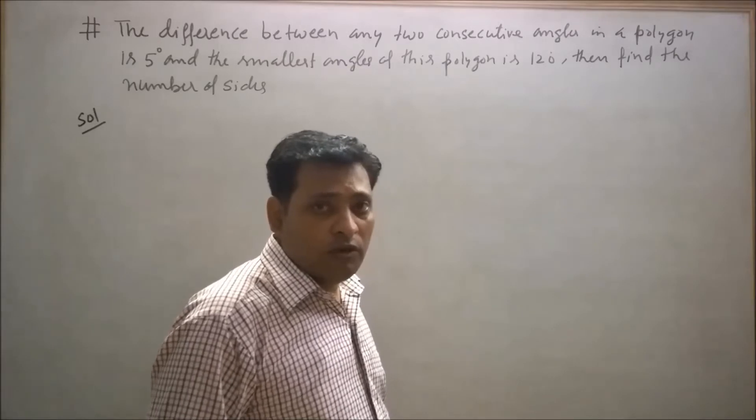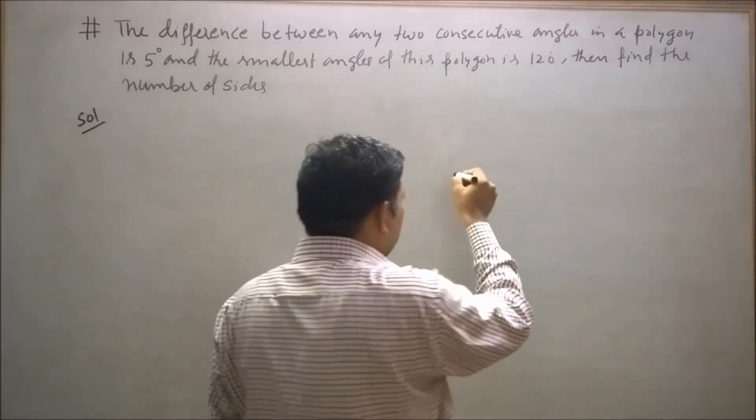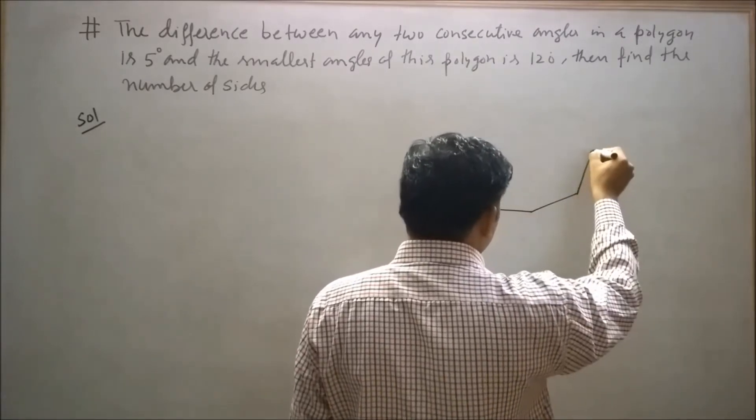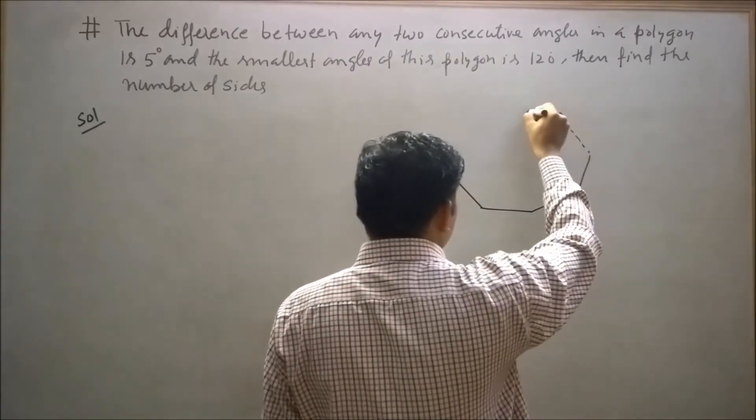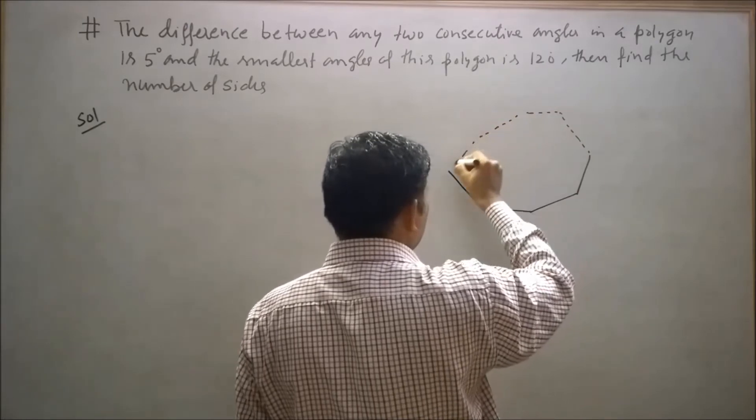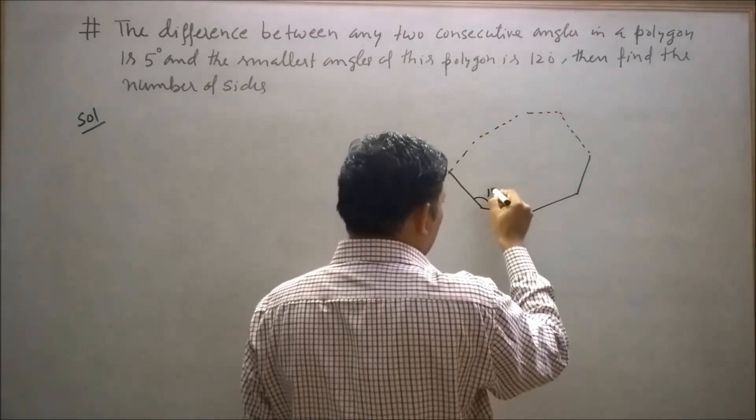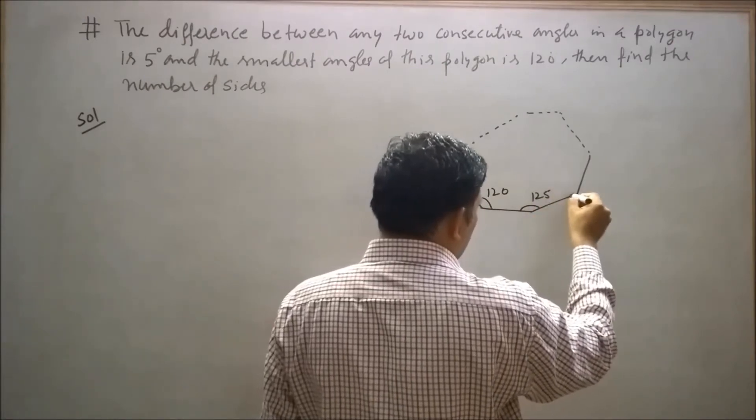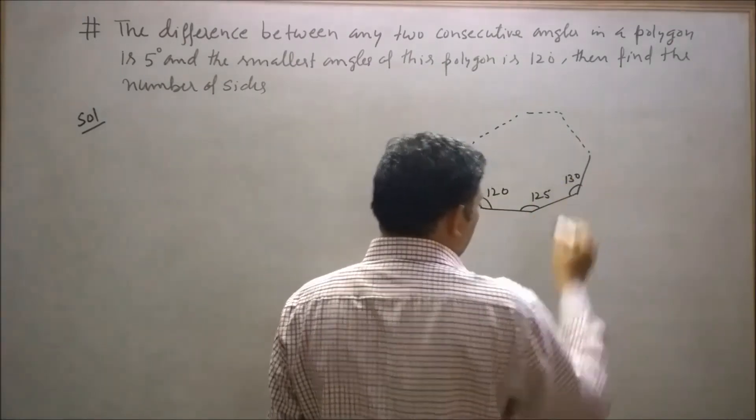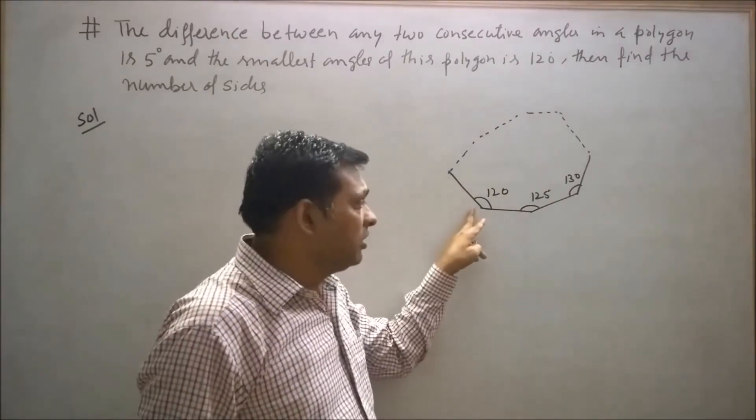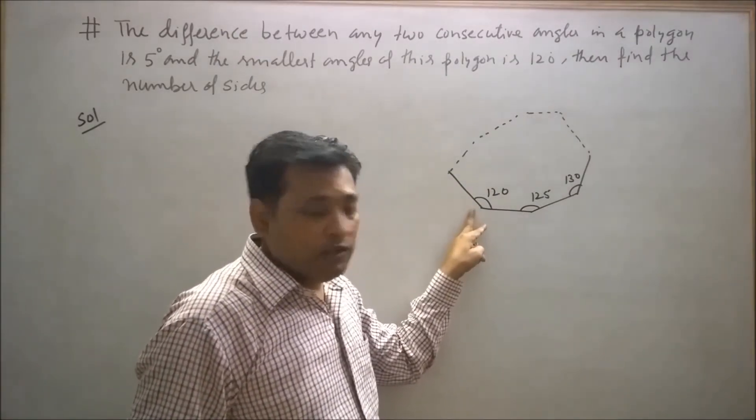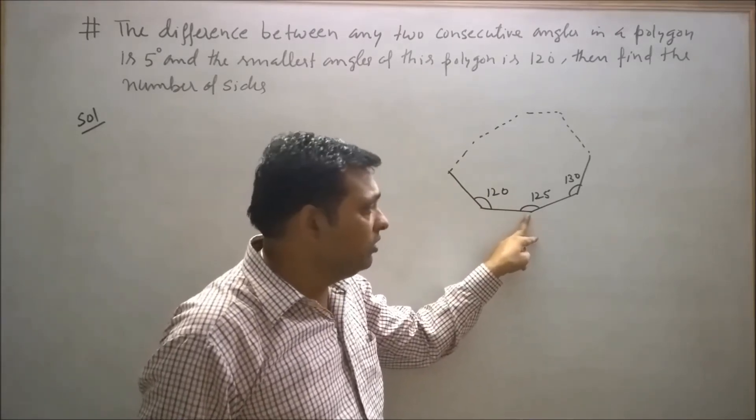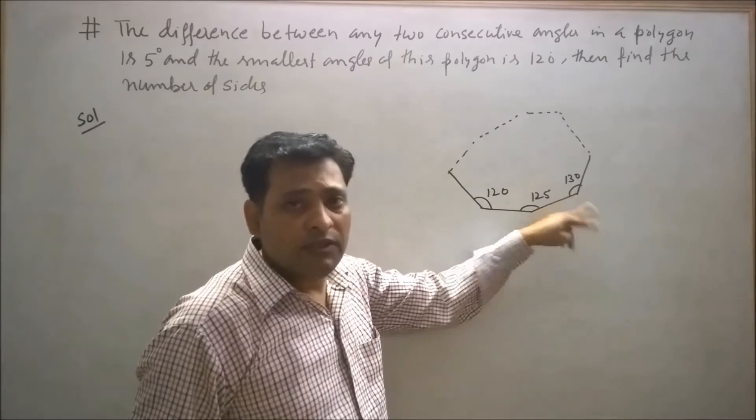Let's consider a polygon having n sides. Let this angle be 120, this will be 125, and this will be 130 by the given condition, since the smallest angle is 120 and the difference between any two consecutive angles is 5 degrees.